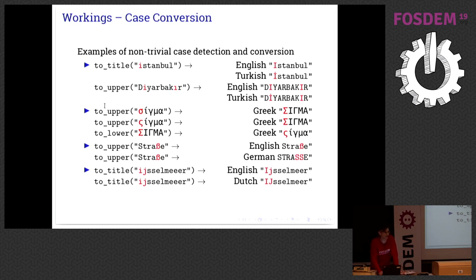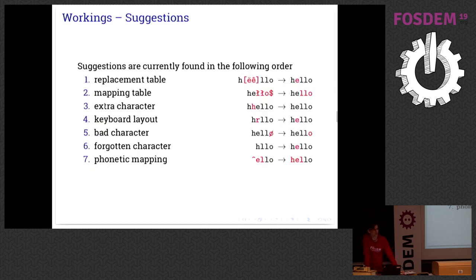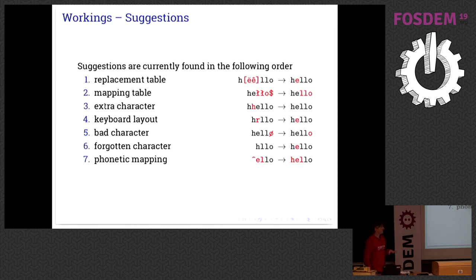To explain a bit more on the suggestions part — which is a bit easier than the spell checking part — it used to be a black box for most people, so here is the secret of how we do it. We start with a replacement table with a lot of known typos, for example diacritics. Then we use a mapping table for groups of characters which might be used incorrectly: characters typed extra, keyboard mishaps because of fat fingers, characters not in the language at all. We also check for forgotten characters and do some phonetic mapping — suppose your mother tongue is another language and you write it phonetically, we can detect these kinds of errors. This is how spelling suggestions are cooked up and presented to you.